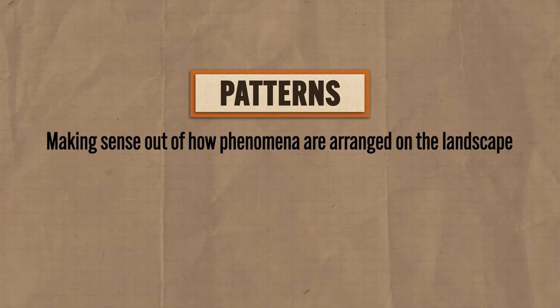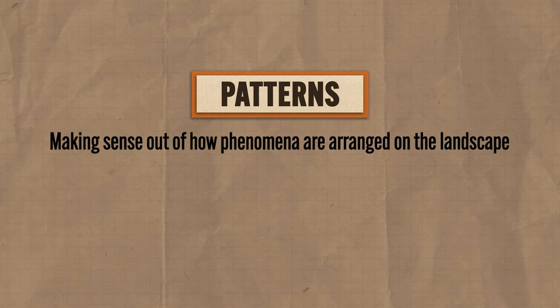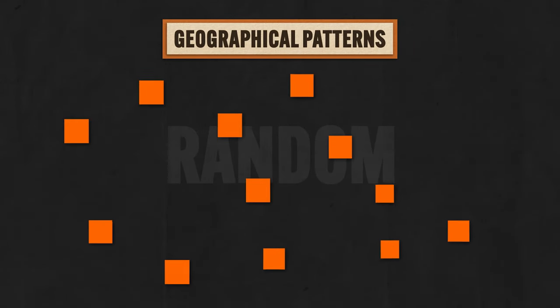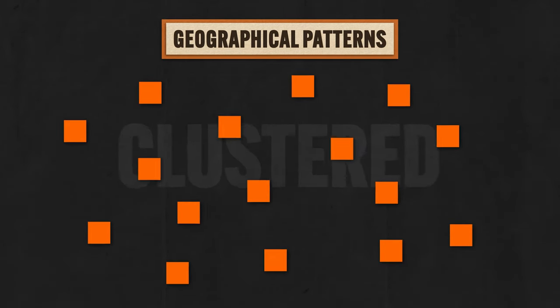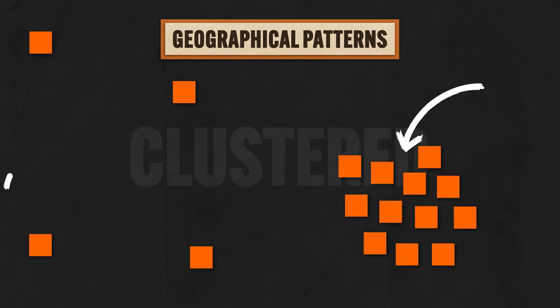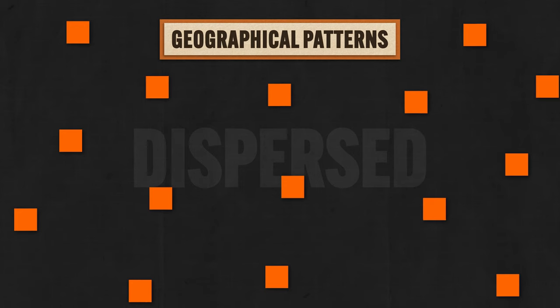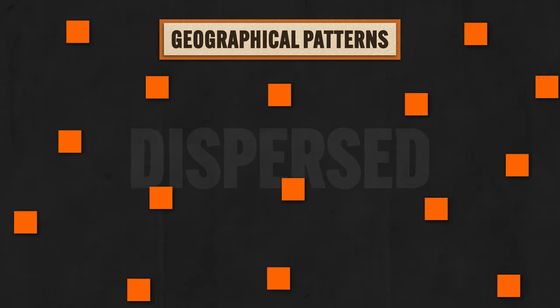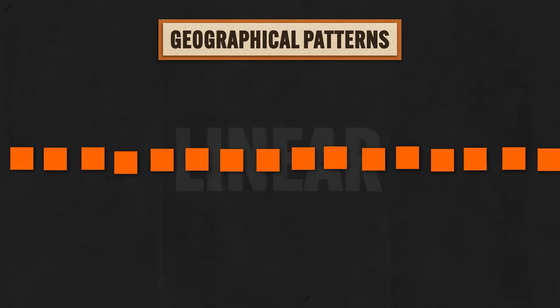The sixth spatial concept is patterns — one of the main tasks of geographers is to describe geographic patterns, making sense of how phenomena are arranged on the landscape. Here are six patterns that show up again and again. First, phenomena can be random, meaning there is no pattern — like pet owners in a region, no real order. Second, clustered patterns, where phenomena are tightly packed together — a big cluster of gas stations where many people live, fewer out where few people live. Third, dispersed patterns, indicating phenomena are spread out. Fourth, linear patterns, where phenomena occur in a straight line — like houses along a road, or historically towns along a railroad.